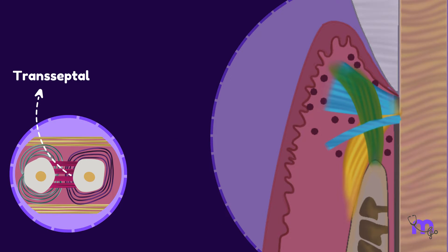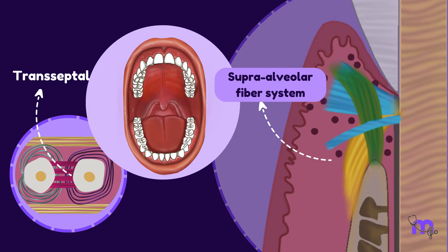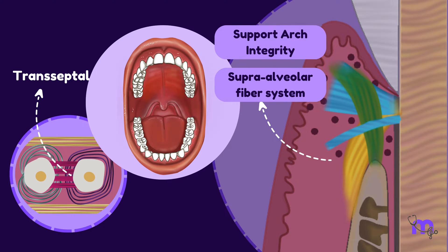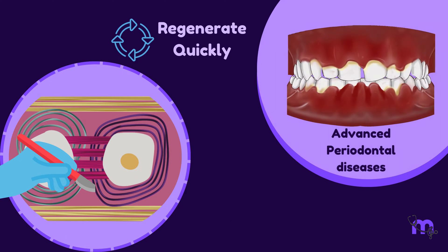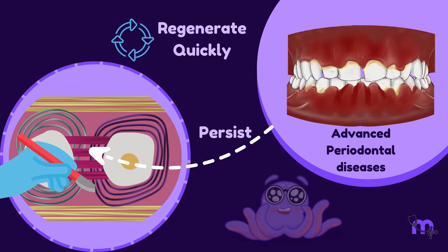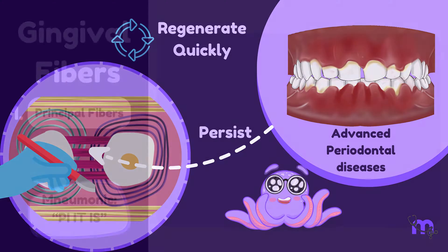Transseptal fibres link all teeth within the dental arch. While part of the supra-alveolar fibre system, they uniquely support arch integrity. Post-removal, they regenerate swiftly. In advanced periodontal disease, remnants of these fibres persist — quite unbelievable.